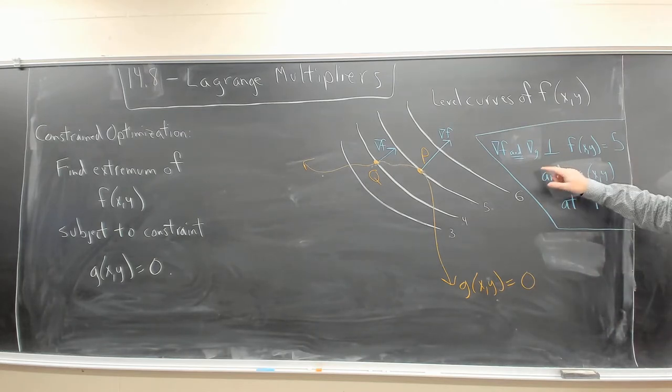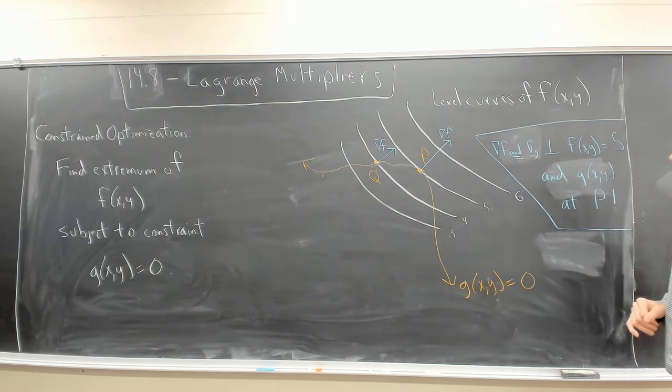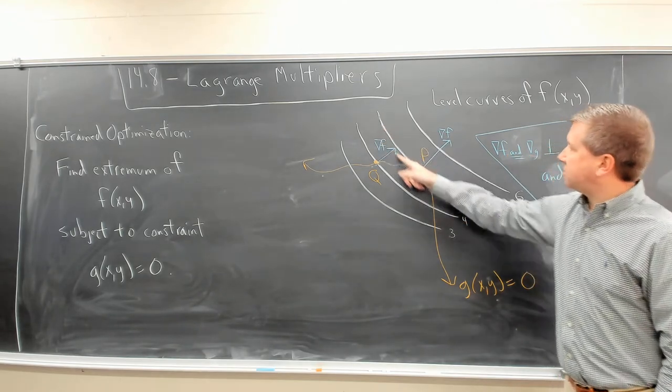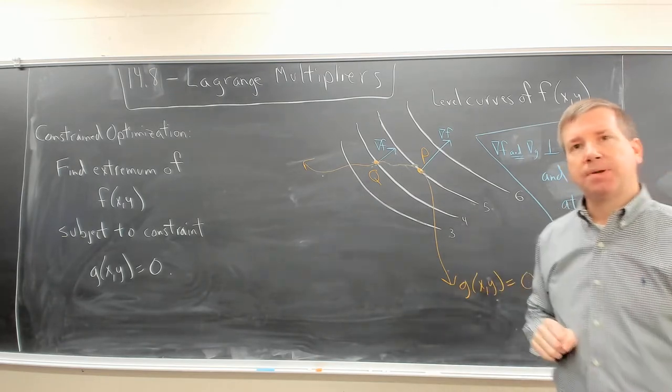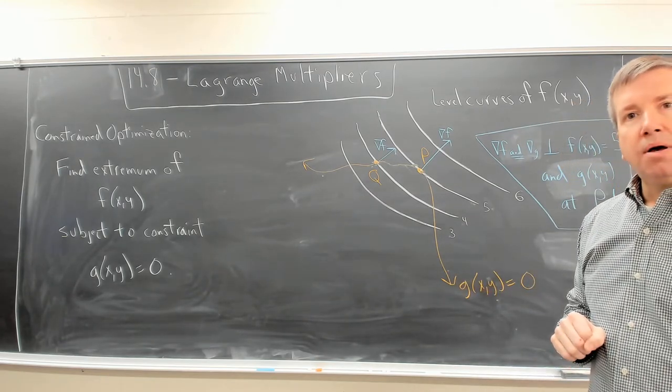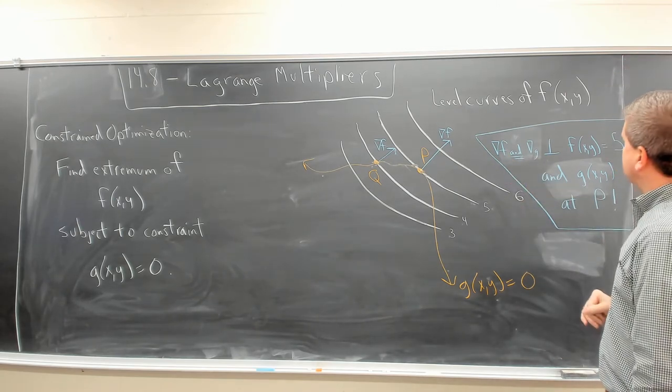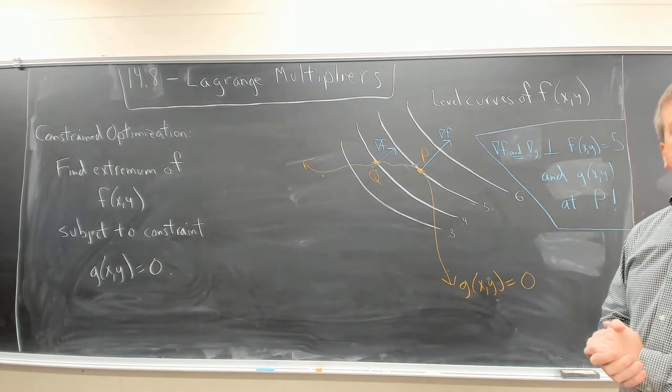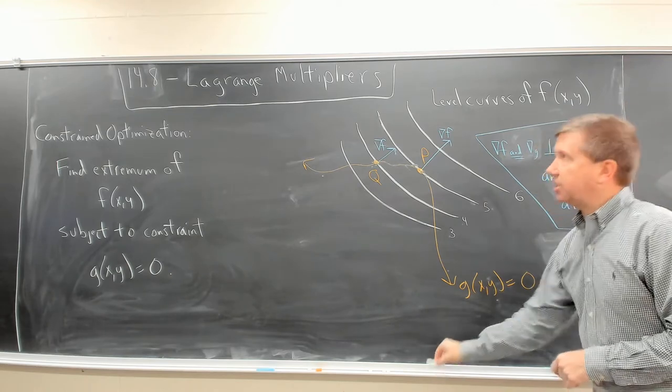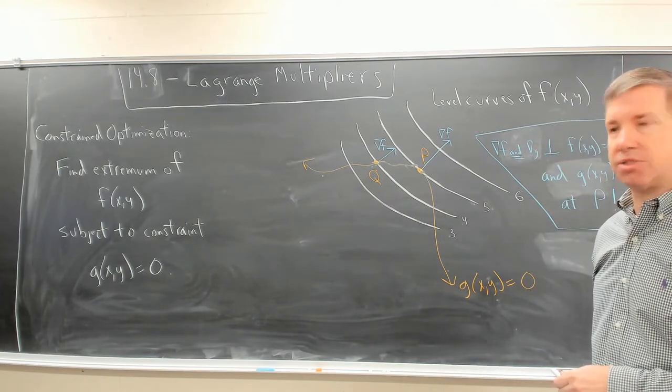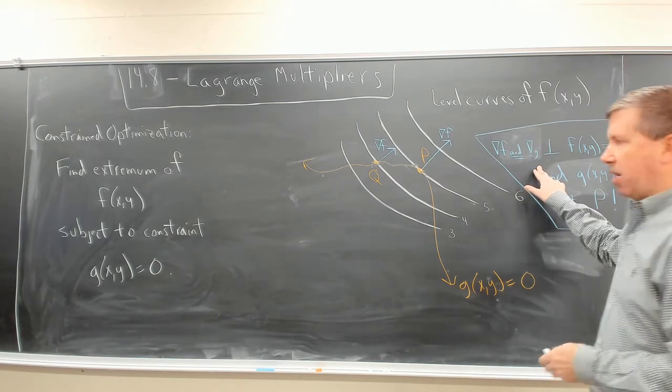So what I can observe here is the gradient of f and the gradient of g are orthogonal to this curve and this curve at p. Well, if two gradients are orthogonal to the same thing, they must be parallel and this is the big realization for the method of Lagrange multipliers. The gradient of f and the gradient of g must be parallel. That is,